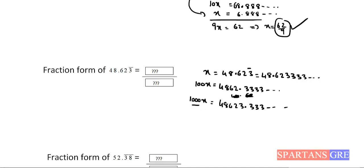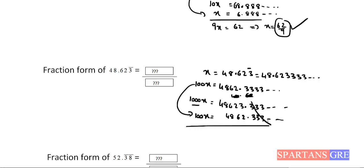Now if you subtract 100x from 1000x, the repeating decimal part cancels and you get an integer value. 100x = 4862.333... Subtracting: 1000x − 100x = 900x, and the result is 43761. So x = 43761/900. This is our answer.